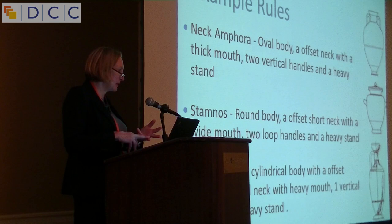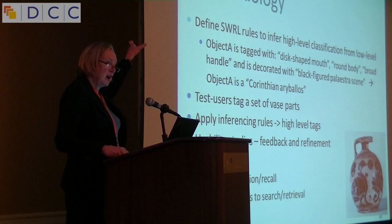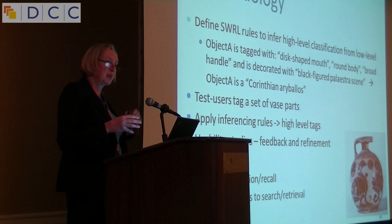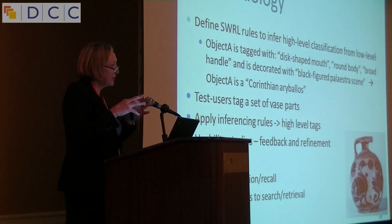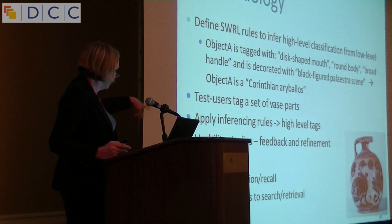We define SWRL rules that infer high-level tags from low-level tags. The low-level tags — things like disc-shaped mouth, round body, broad-handled — are attached by students in the UQ Antiquities Department. So it's both an e-learning tool as well as an annotation and tagging tool. The test users annotate vase parts, we apply the inferencing rules, and then we do various evaluations. We also use a laser scanner — and now there are smartphones that allow you to scan artifacts using a mobile phone.